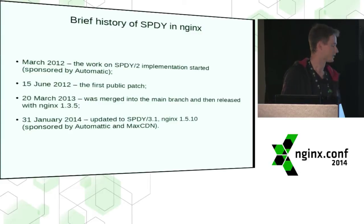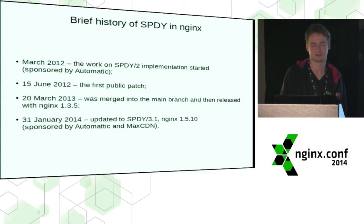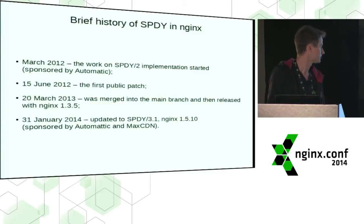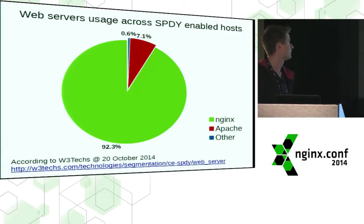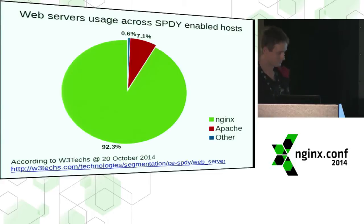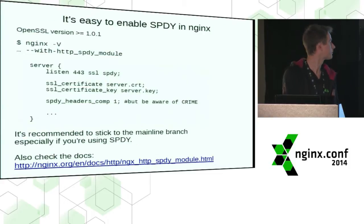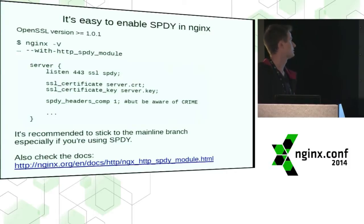It was almost a year later when we merged this code into the Nginx mainline version. Thanks to Automattic and MaxCDN, we updated the SPDY implementation to the latest draft at the beginning of this year. Currently today, we are the main web server used on sites that serve SPDY. We are proud of it. And it's really easy to enable SPDY in Nginx.